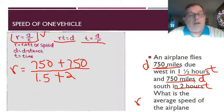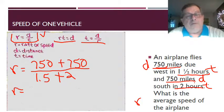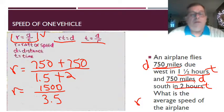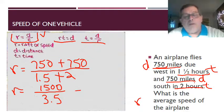All right, so 750 plus 750 is 1500. It traveled a total of 1500 miles. And one and a half plus two gives me three and a half, so it traveled a total of 1500 miles in a total of three and a half hours.